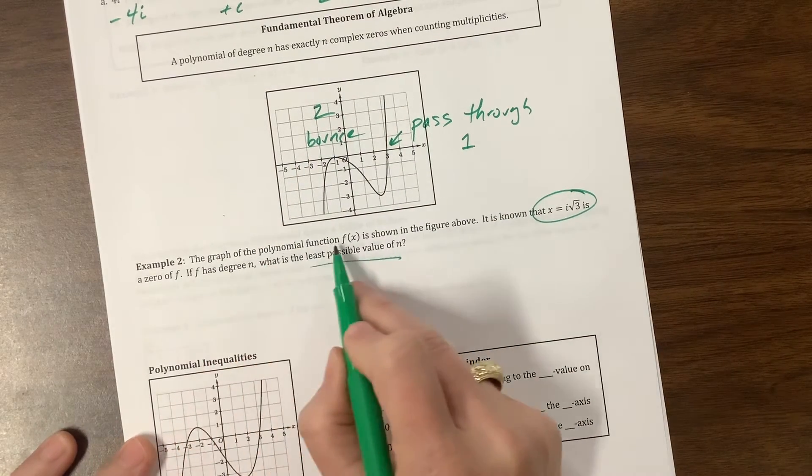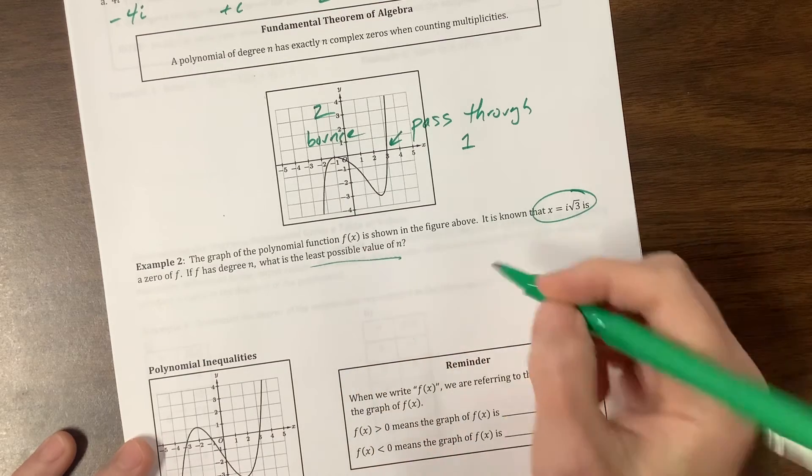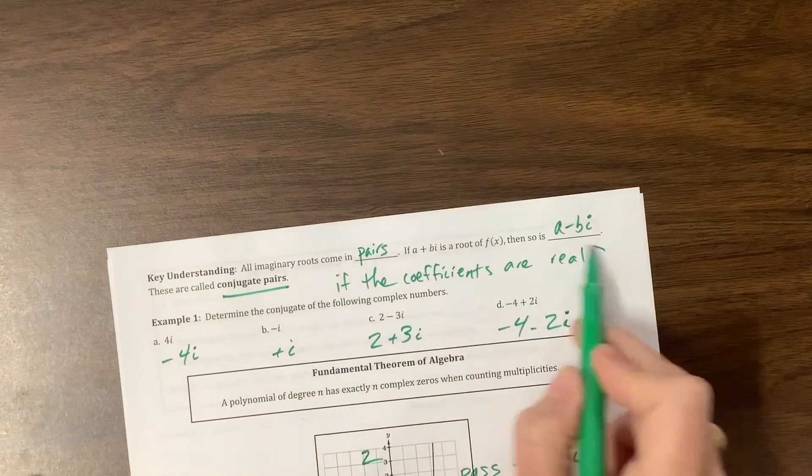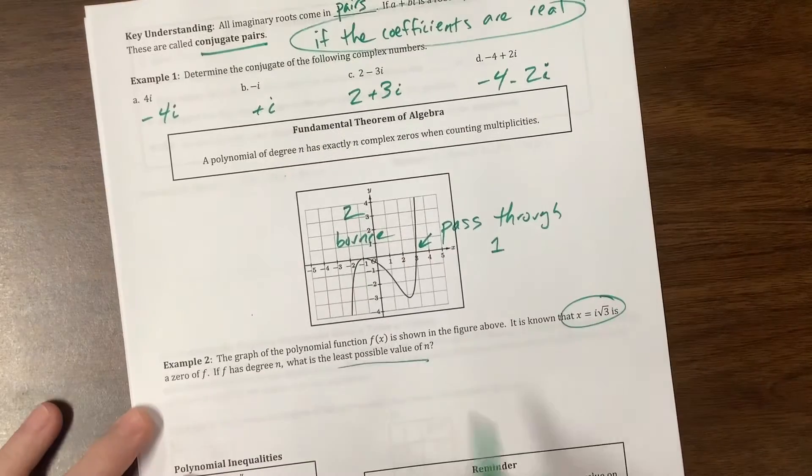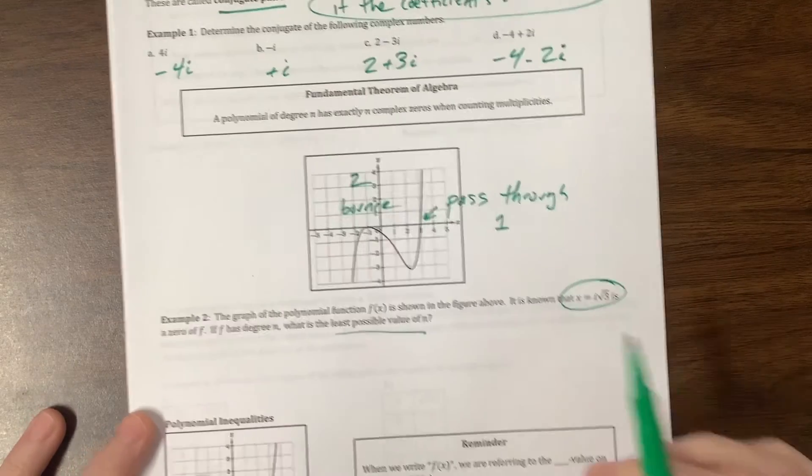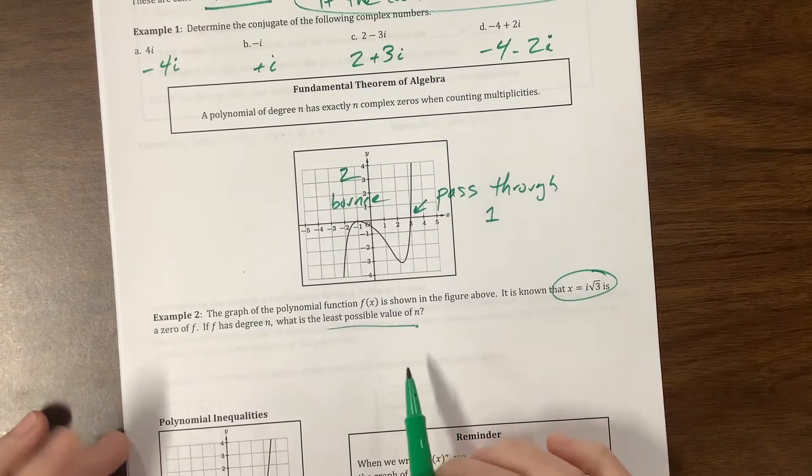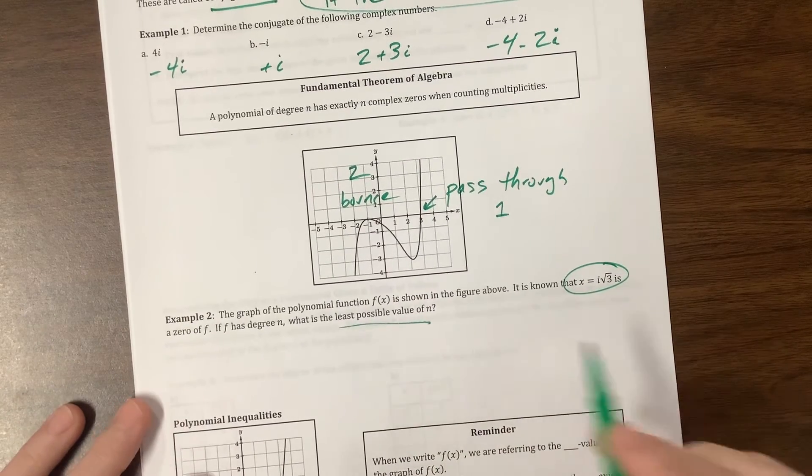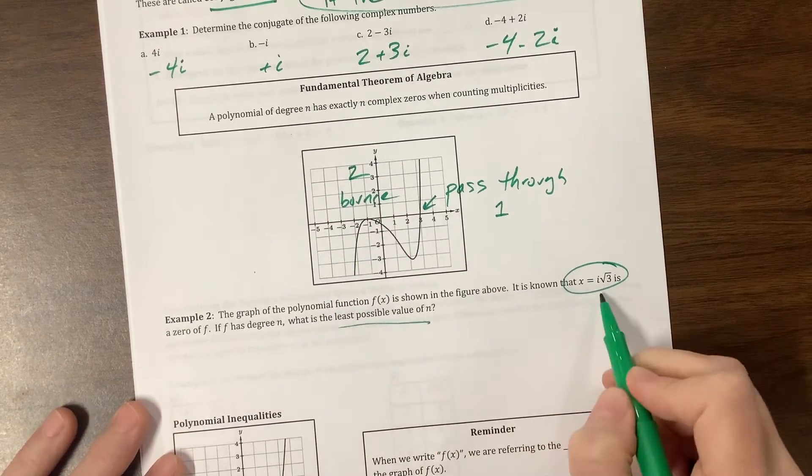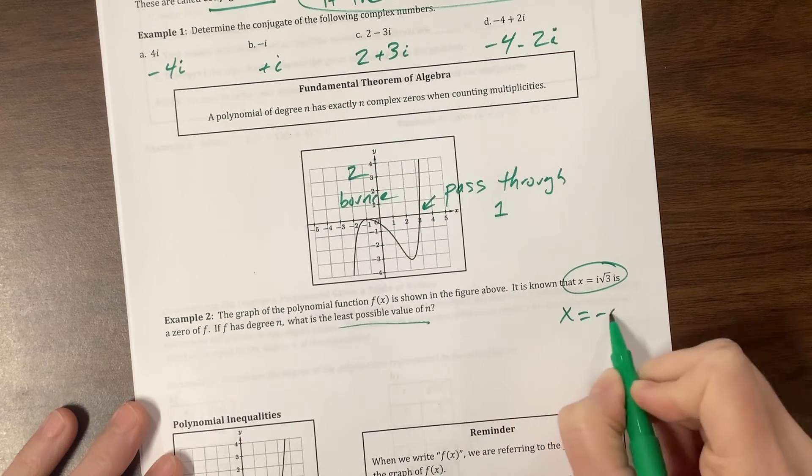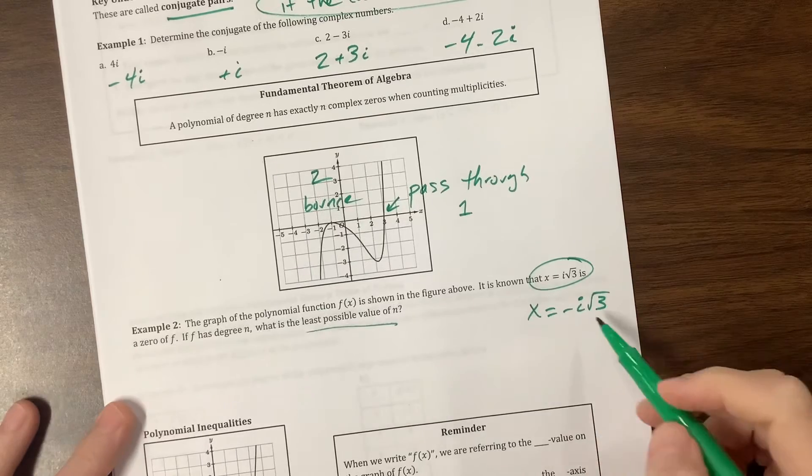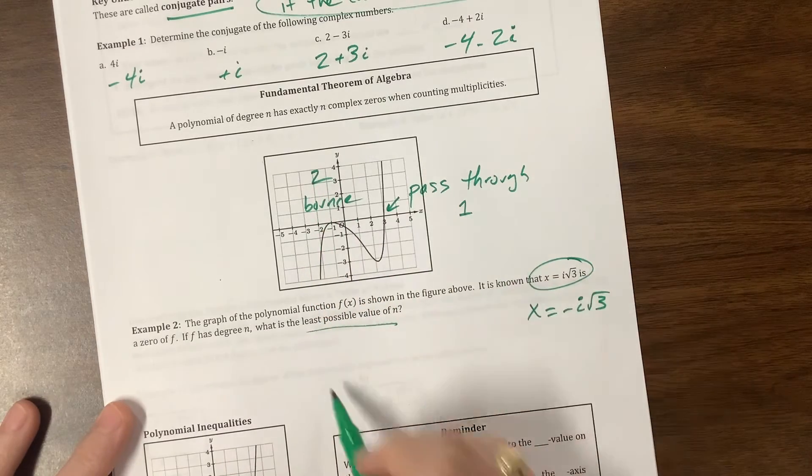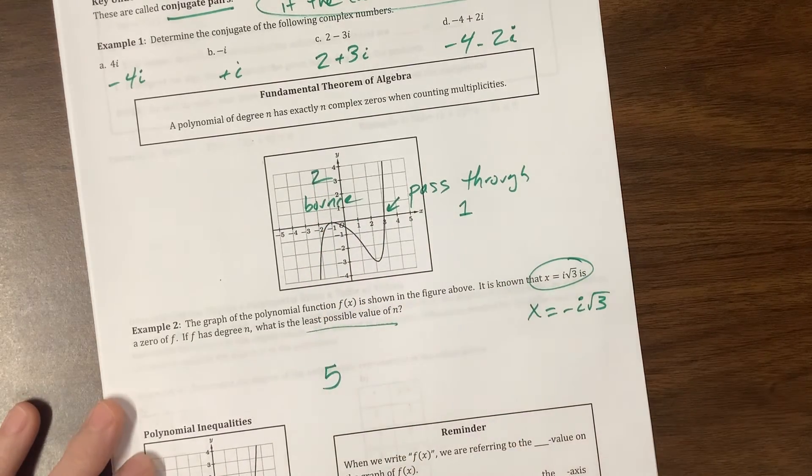What they really should have said is the graph of the polynomial function f(x) is shown in the figure above, and we should have included this sentence: The coefficients are real. They did not, but they should have. They intended to. I will try and make it more clear when I write things. So we've got this guy will have to travel with its buddy in order to make the coefficients real. So there's 1, 2, 3, 4, 5, so the least possible value of n is 5.